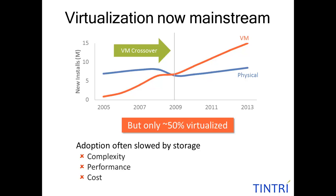There are now more virtual machines deployed than physical servers. Since 2009 was an inflection point where VMs deployed exceeded the number of physical servers in the marketplace. However, only 50% on average of the server or application estate gets virtualized — adoption really often slowed down by complexity, performance, or cost. A number of applications are traditionally left physical either through fear of failure, vendor best practice recommendations, or complexity and cost. Things like Exchange, SQL, Oracle, SAP, and SharePoint tend to be applications that are more challenging to virtualize.